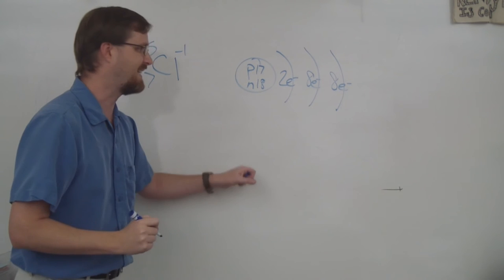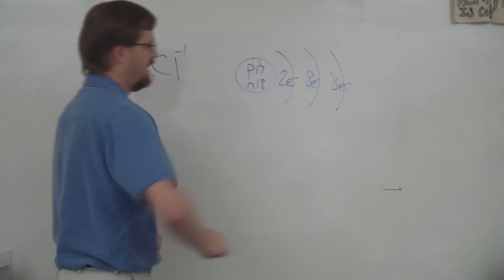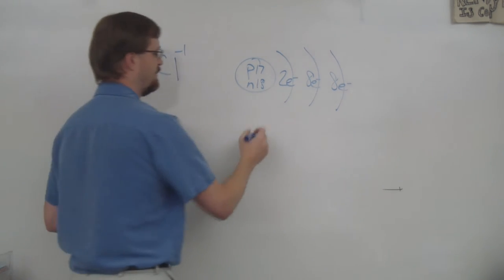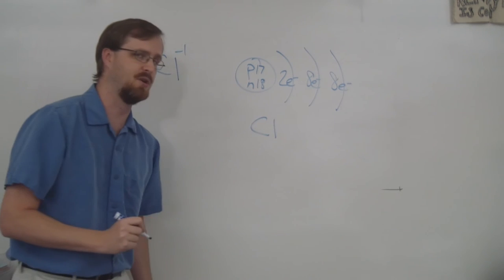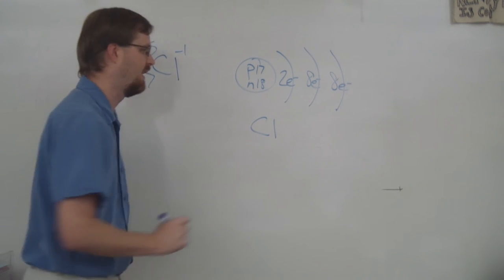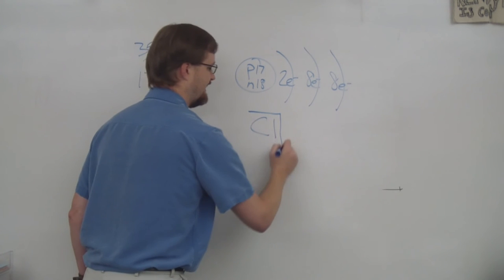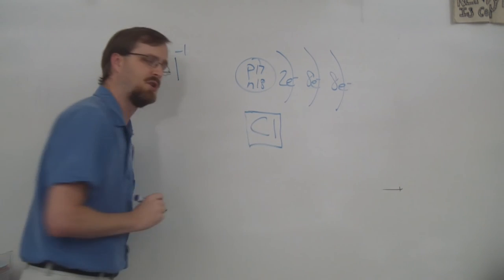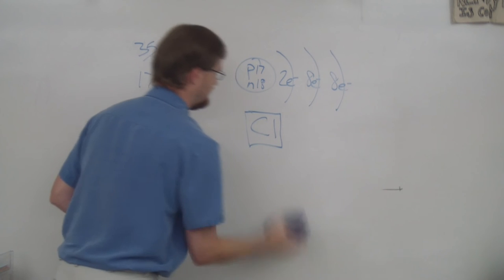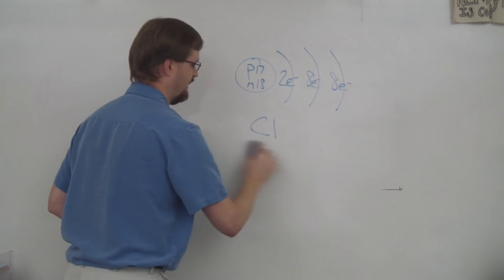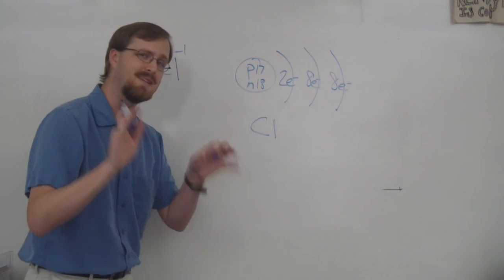And fortunately for us, the third level can hold eight electrons, so there we go. That is our Bohr model. And now for the e-dot structure, we simply take the symbol, which in this case is Cl. And please imagine that there is an invisible box surrounding the symbol.